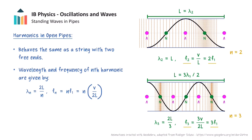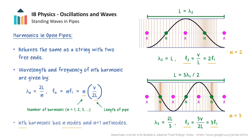The allowed wavelengths and frequencies for the nth harmonic in an open pipe satisfy the same relationships as the allowed harmonics on a string with two free ends, where n represents the number of the harmonic and l represents the length of the pipe. In addition, the number of the harmonic gives us the number of nodes in a pipe that is open at both ends.